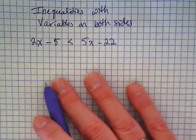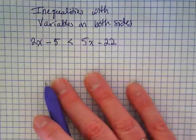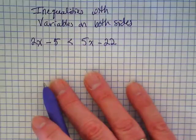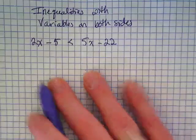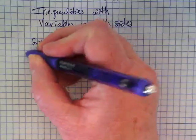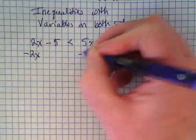What do we start with, the one with the variable or the constant? Variable. The variable, and we start with the variable that is the lowest, which is 2x. So we're going to subtract the 2x from both sides.